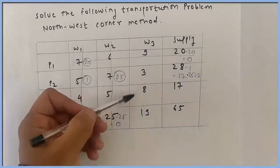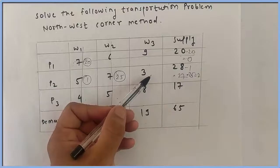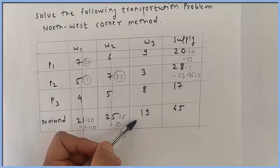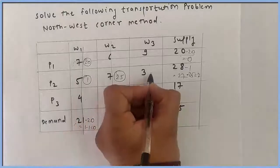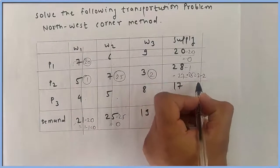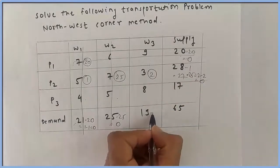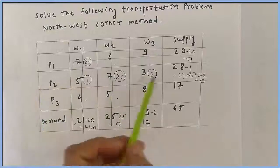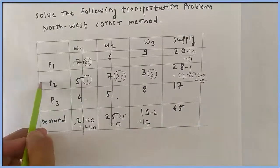Now look at the remaining two cells. The Northwest corner cell has supply of 2 units and demand of 19. We allocate the lesser unit, which is 2. After this allocation, supply becomes 2 minus 2 equals 0, and demand becomes 19 minus 2 equals 17. Since the second row supply is now 0, we cancel this row.